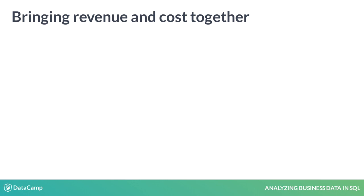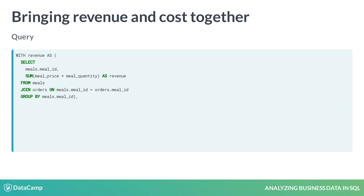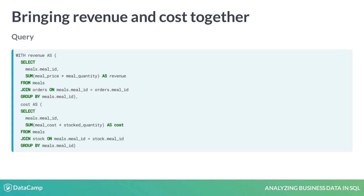To calculate profit, combine the revenue and cost queries by storing each of them in a CTE. To calculate profit per meal, write a query that calculates revenue per meal and store it in a CTE called revenue, summing each meal's price times its ordered quantity and grouping by meal ID. Then write a query that calculates cost per meal and store that in a CTE called cost, summing each meal's cost times its stocked quantity and grouping by meal ID.